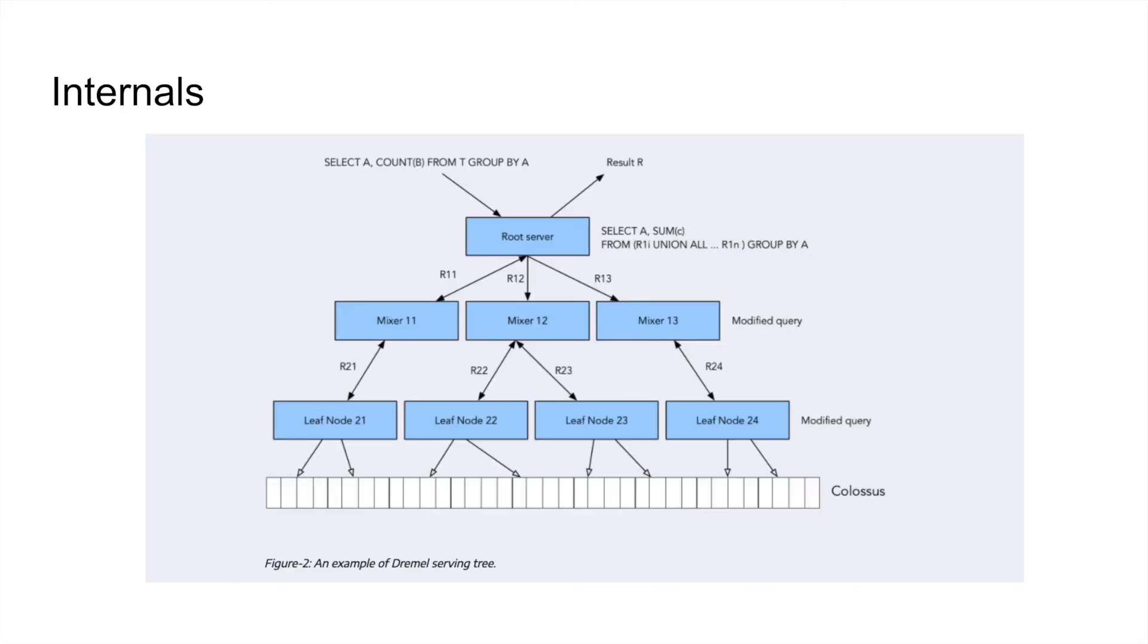Let's look into how Dremel actually works. Let's assume you have a query select a count b from your table d when you are grouping by column a. When BigQuery root server receives this query, it understands it and knows how to divide it into smaller submodules. So in our case, the select a count b query becomes select a some c and it divides the query further into R1 to R1n.